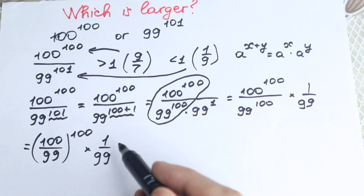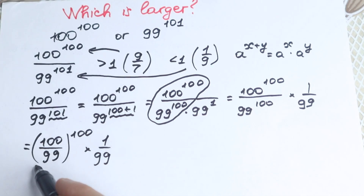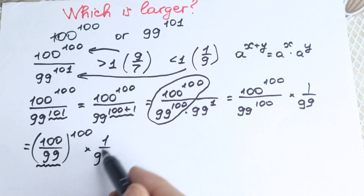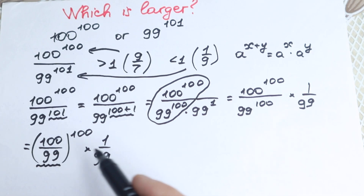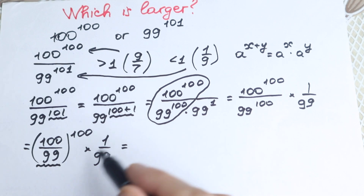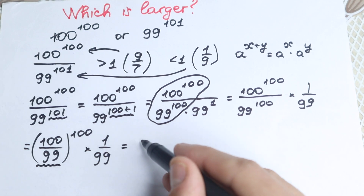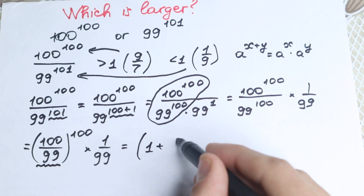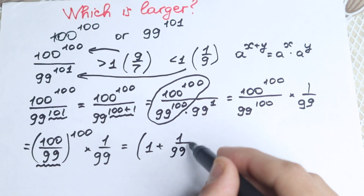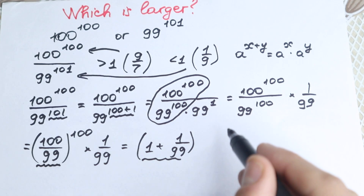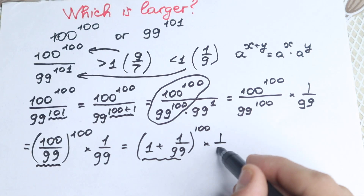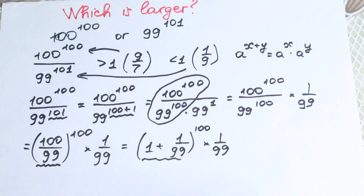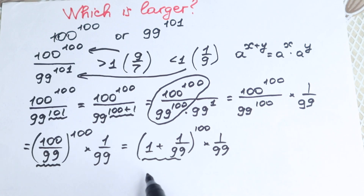This is a constant, which is great. We can express 100 over 99 as a sum of two fractions: 100 over 99 equals 1 plus 1 over 99. So our expression becomes (1 + 1/99) to the power 100, times 1 over 99. This is a very important step — I just rewrote 100 over 99 as this sum.